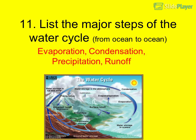Question 11: List the major steps of the water cycle from ocean to ocean. Evaporation, condensation, precipitation, runoff.